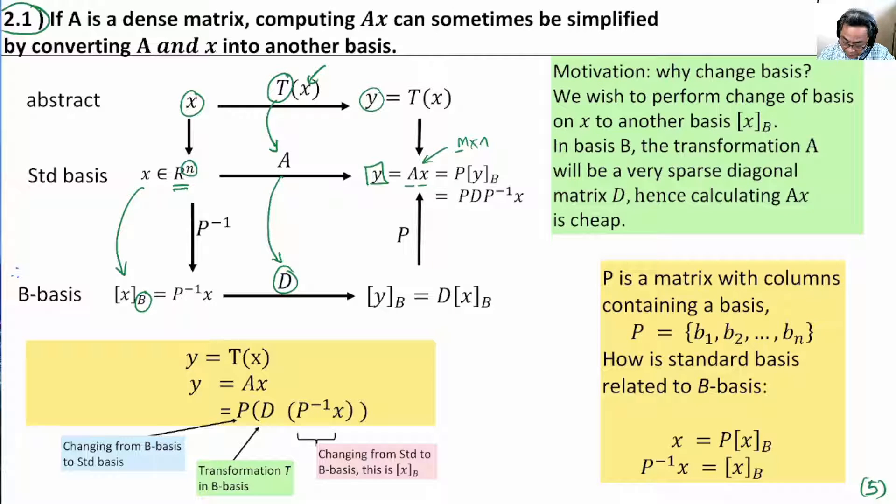But in this example, we wish D to be as simple as possible. In our case, let's focus on the diagonal matrix case, where D represents the same transformation T in the B basis as a diagonal matrix. Why we do that? It's because when D is a diagonal matrix, the multiplication is very simple. Computation is very simple.